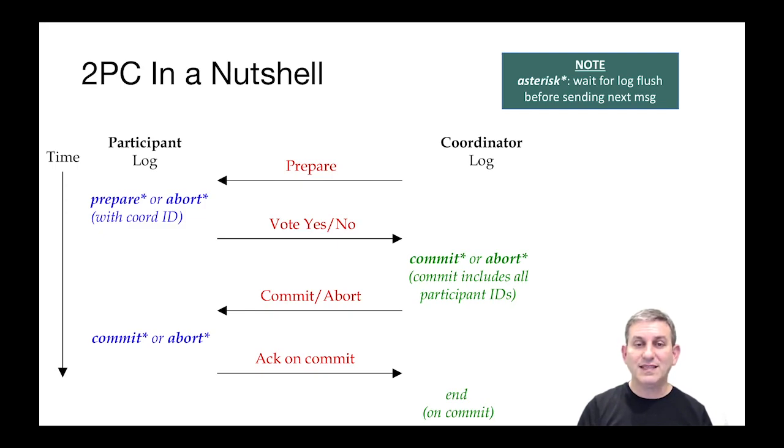The only one that is an exception is at the very end, the end log record doesn't need to flush for the transaction to return to the user. That's just like we have in a single node database.